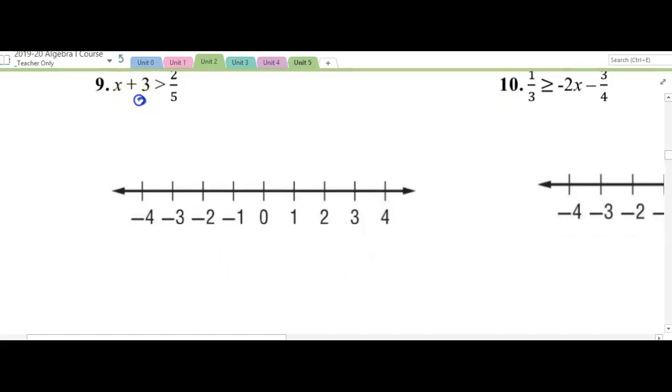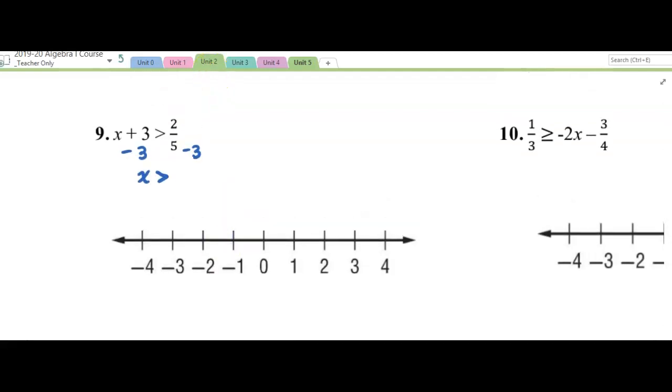Number 9, I'm going to subtract 3 from both sides. In other words, I'm going to take away 15 fifths, because that's the same thing as 3. And I get negative 13 fifths. That's actually equal to 2 and 3 fifths when I change that. So negative 2 and 3 fifths would be about here. So I'll put my open dot here and shade to the right.